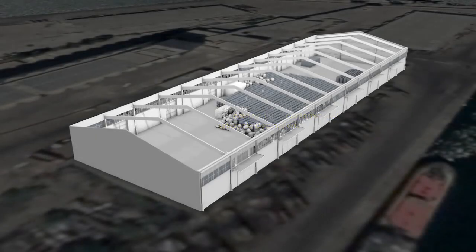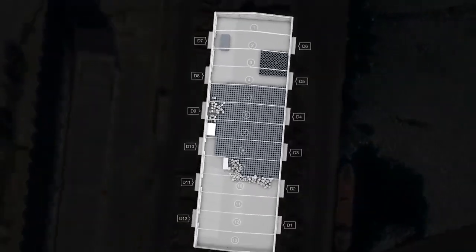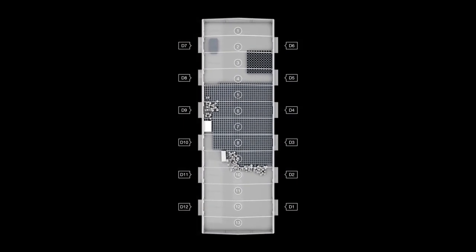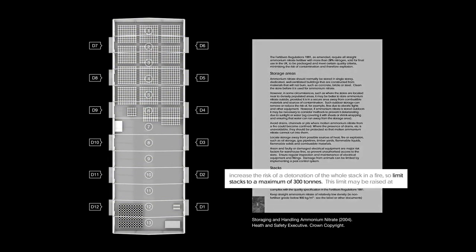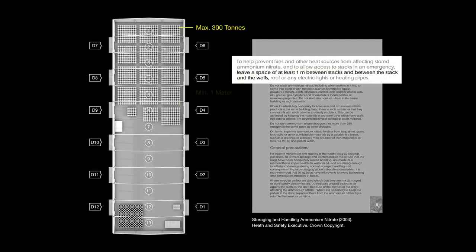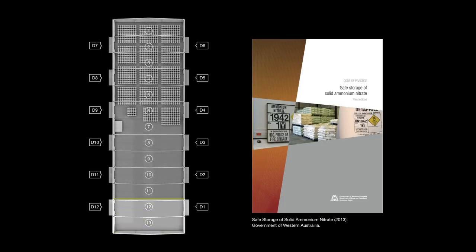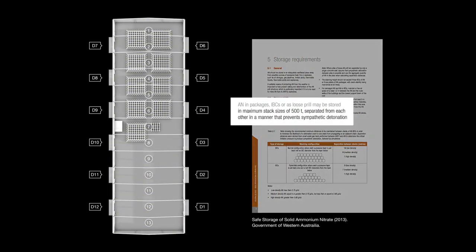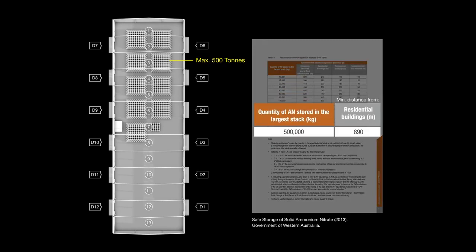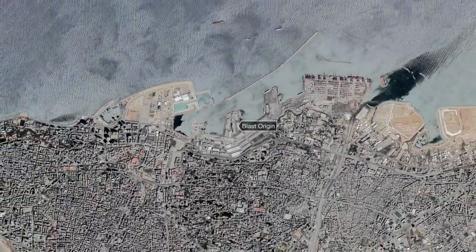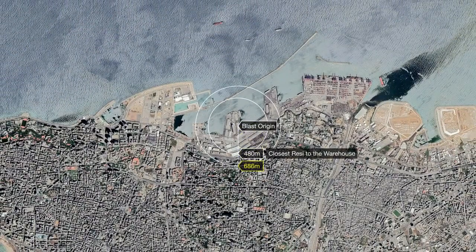Ammonium nitrate is sensitised by the presence of even the smallest quantity of additives and hence should be separated. We reviewed international standards for the storage of ammonium nitrate. According to British standards, stacks of ammonium nitrate must be limited to 300 tonnes, and each stack must be at least one metre away from walls and other stacks. Australian standards are more stringent: bags must be arranged in 500-tonne stacks, but should be stored 890 metres away from the closest residential buildings. Using their equation to calculate safe distances, we can determine that a 2,750-tonne stack of ammonium nitrate should have been stored 1,570 metres away from the closest residential building.